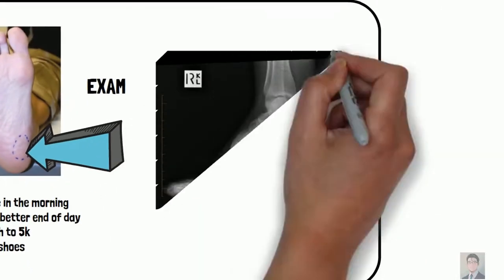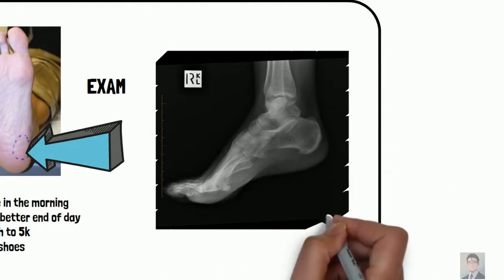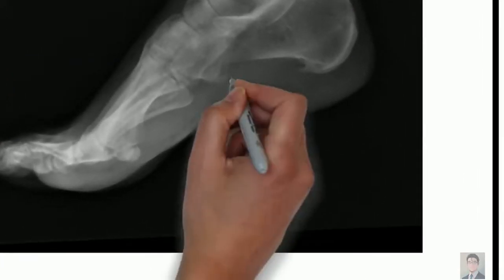On an x-ray, sometimes you can see a spur. Now it's not always correlated to the pain with the spur. Sometimes you have calcifications in that insertion site.